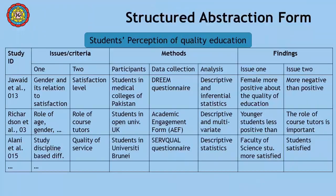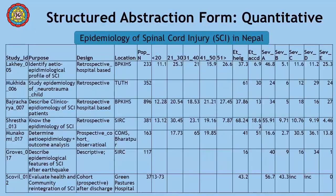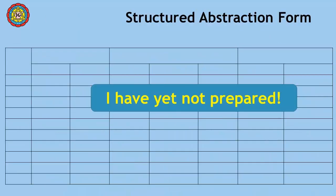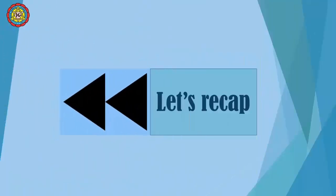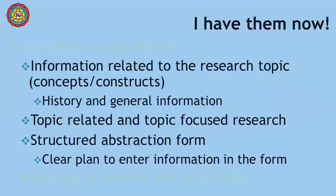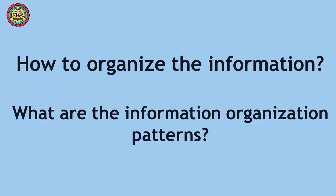The reason is that the first form was for a qualitative study and the second one was for a quantitative study. If you don't have these yet, pause the video and start work. To recap: along with the general information relevant to literature and a field of abstraction form, what we needed was knowledge of organization patterns.